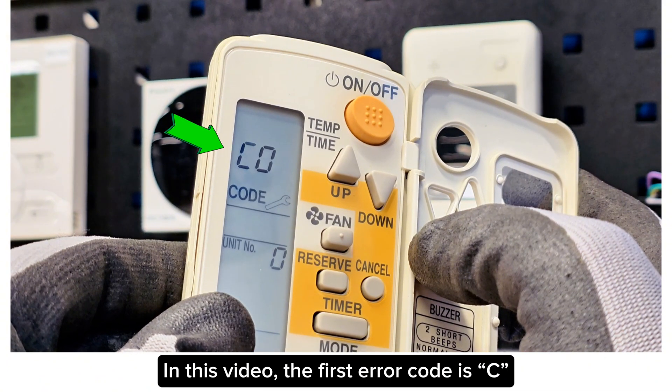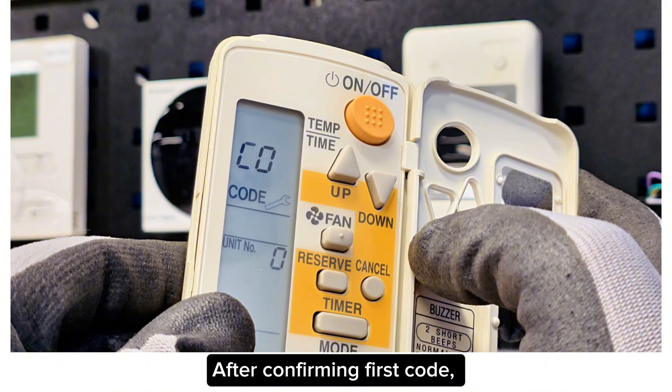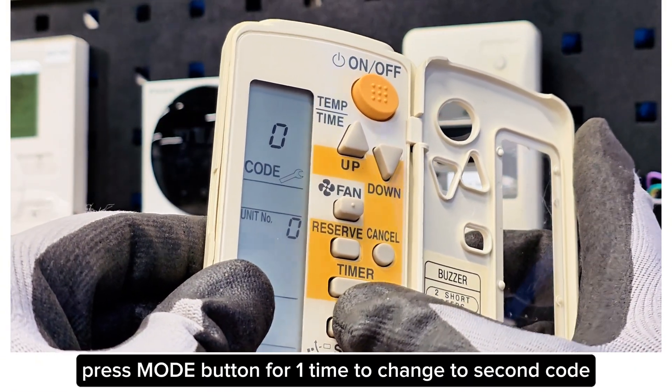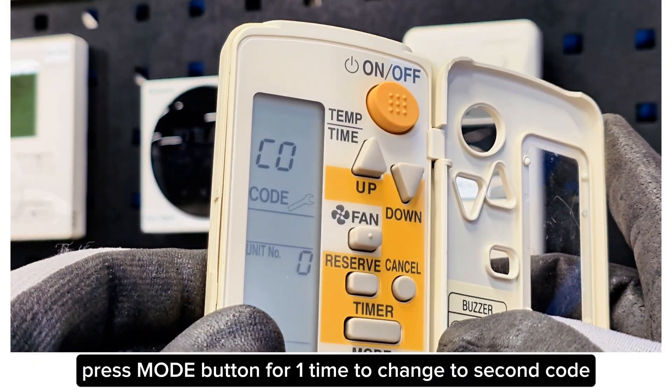In this video, the first error code is C. After confirming first code, press Mode button for one time to change to second code.